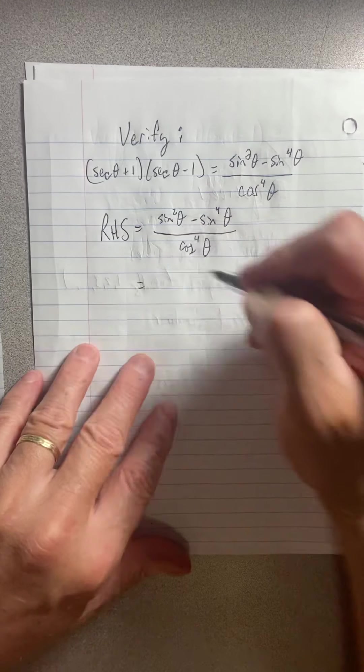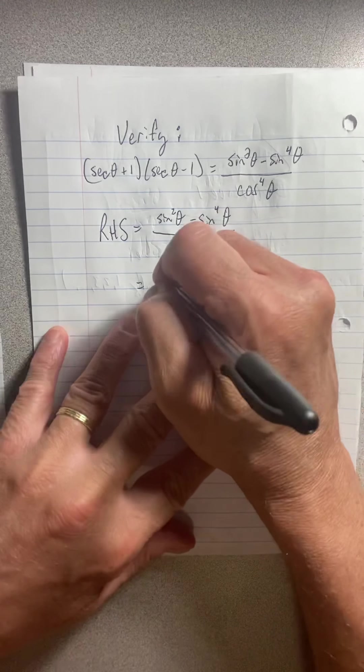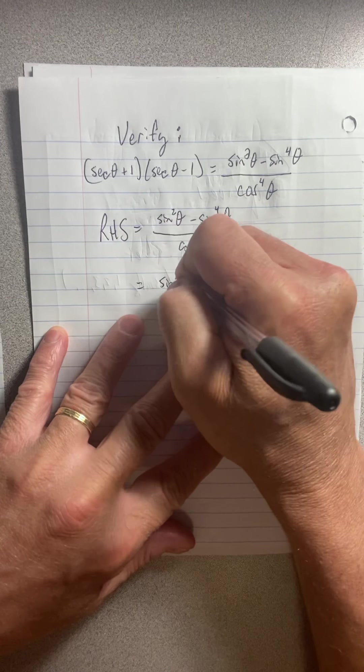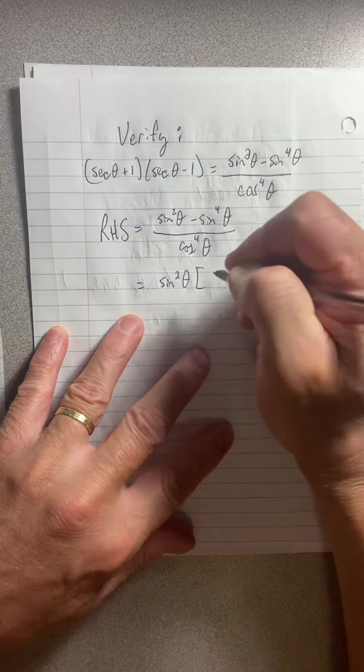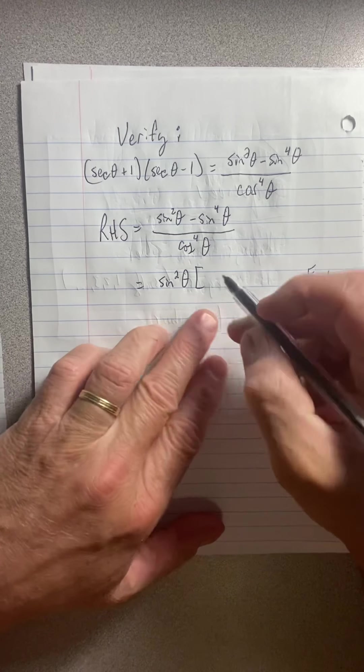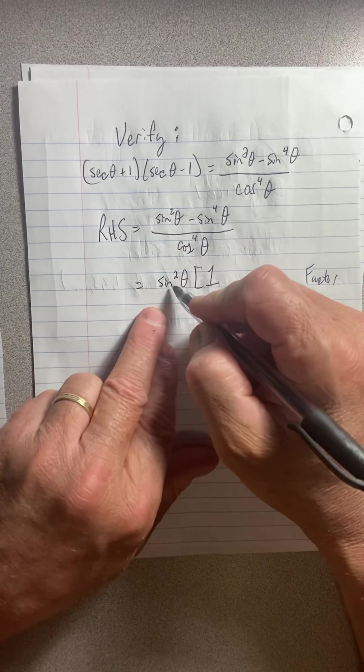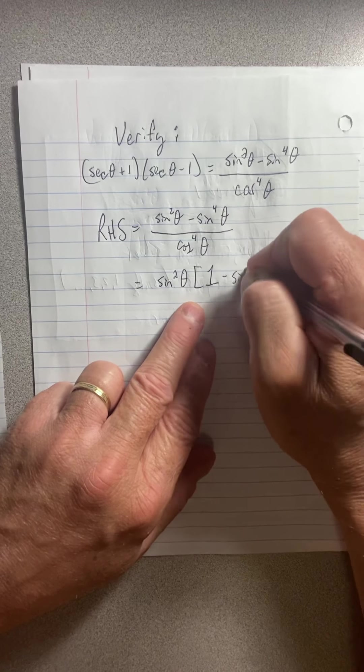So now I'm going to take out the common factor in my numerator. If you can factor it's always a good idea to factor. If you see an opportunity to factor then you should factor. So I'm going to divide sine squared into sine squared and get one, and then I'm going to divide sine squared into sine to the fourth and get sine squared.